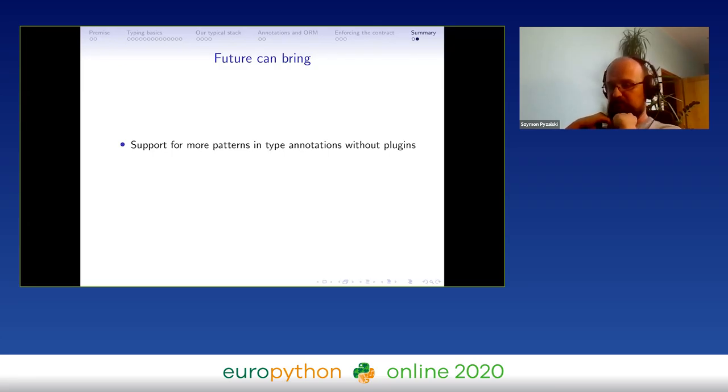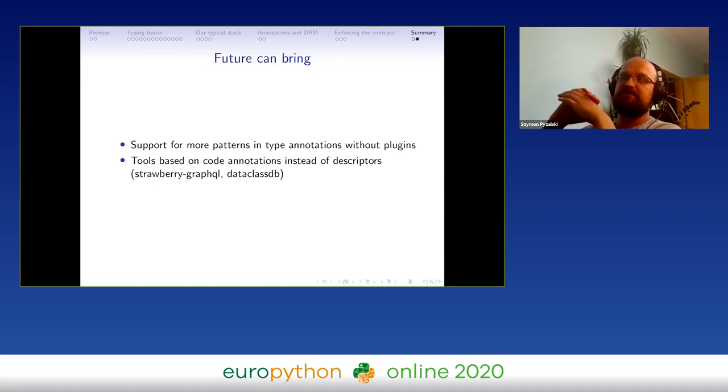What can we see in the future? I believe that one thing we need to expect or maybe work on is more patterns in type annotations that are available without plugins, so we can actually make type annotations that would work in every system, not only in mypy. The other thing is tools that are based on code annotations, not on descriptors. This is so they work like dataclasses. There are two projects like this: it's Strawberry GraphQL - we will have a sprint of Strawberry GraphQL on this conference - and dataclass-db. They also try to do the same thing that Django REST framework or Graphene or ORMs do, but in a different way.